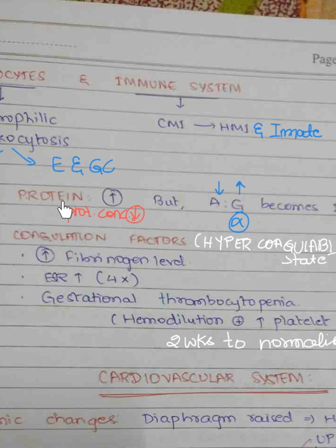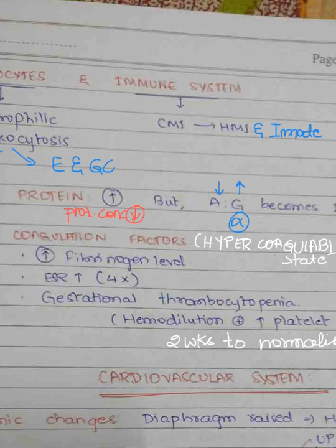Total protein levels increase, but due to hemodilution there is a decrease in protein concentration. Albumin concentration decreases by 30 to 40 percent, while globulin concentration increases, mainly alpha globulins. This cumulative effect causes the albumin-to-globulin ratio to change from 1.7 to 1:1. Pregnancy is simply a hypercoagulable state with increased coagulation factors in the body.